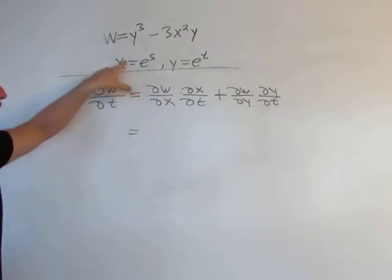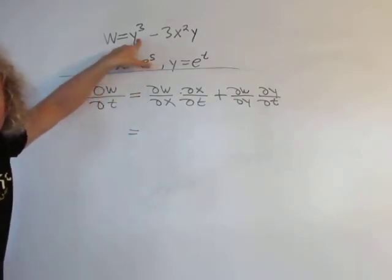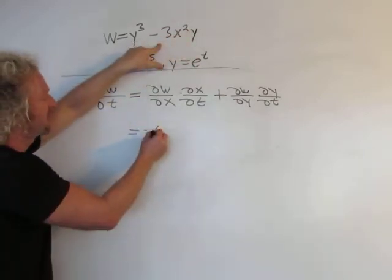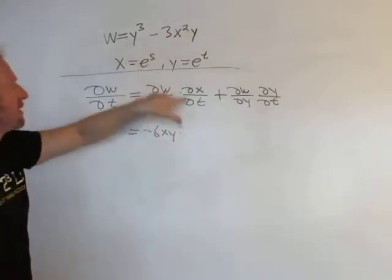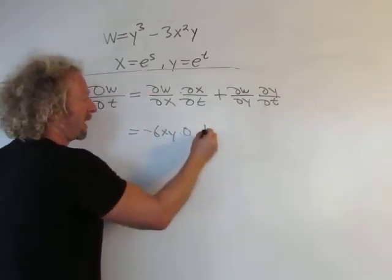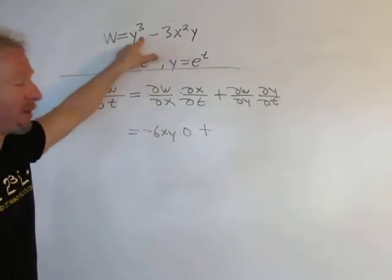So del w del x, that's going to be, well, that's zero. We're fixing y's. So we're going to get negative 6xy. And then del x del t, well, that's just going to be zero because there's no t here.